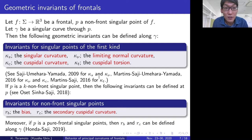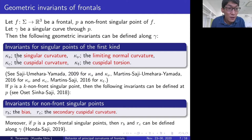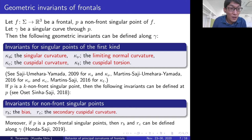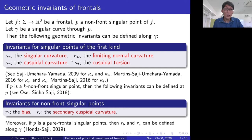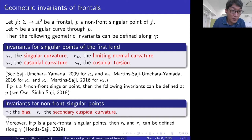Let f be a frontal and p a non-front singular point of f. Let γ be a singular curve through p. Then the following geometric invariants can be defined along γ: κ_S is called the singular curvature, κ_ν is called the limiting normal curvature, κ_C is called the cuspidal curvature, and κ_T is called the cuspidal torsion. Here κ_S is an intrinsic invariant of frontals, and κ_ν and κ_C relate to the behaviour of the Gaussian curvature. Moreover, if p is a k non-front singular point, then additional invariants can be defined at p.